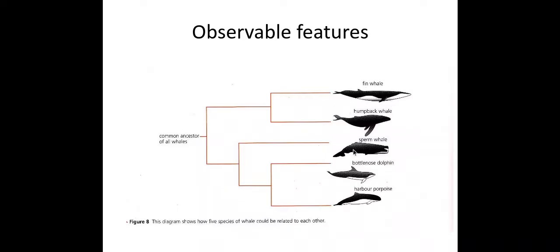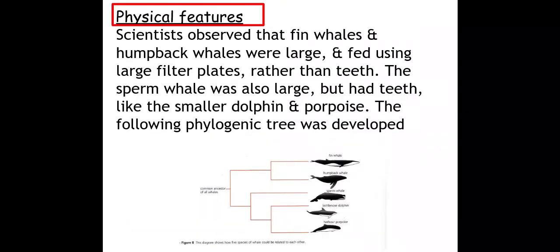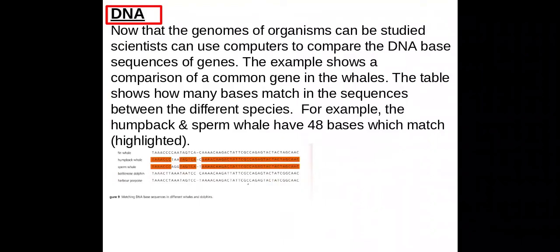As well as physical or observable features, we can also use DNA. What we're looking for in DNA is to see if the base sequence is similar or not. If the base sequence is similar between different organisms, this means they're more closely related.